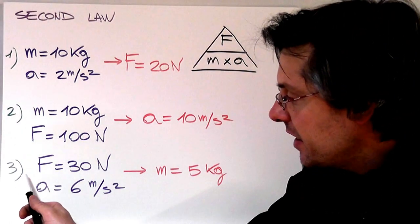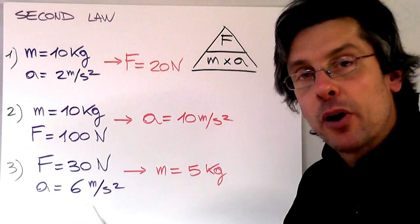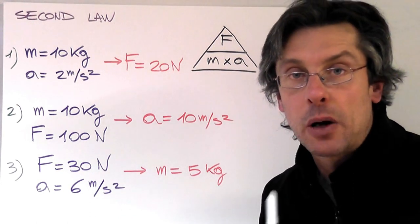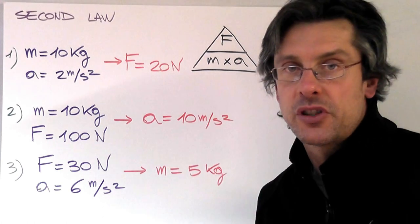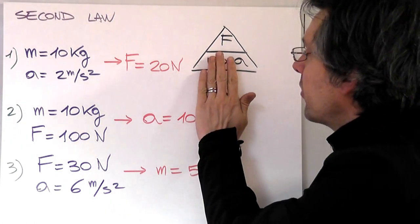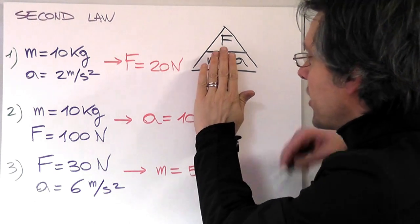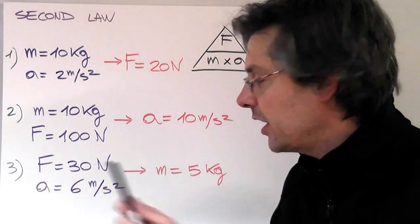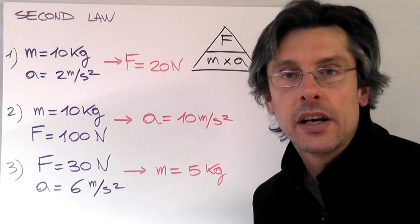Last but not least, if I have a force of 30 newtons and a corresponding acceleration of 6 meters per second squared, I can figure out what is the mass of the object upon which that force is applied. I'm going to cover the mass, and as you can see, the mass is given by the ratio between force over acceleration. 30 divided by 6 gives me a mass of 5 kilograms.